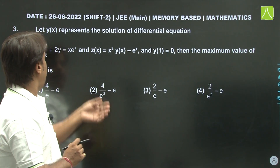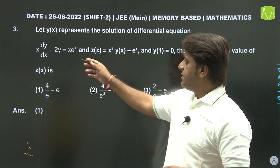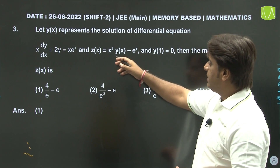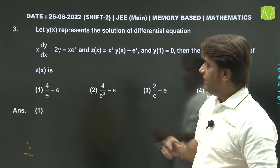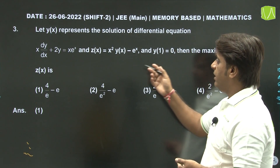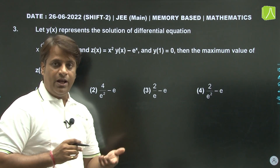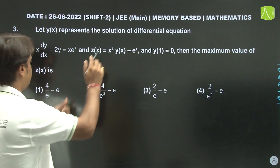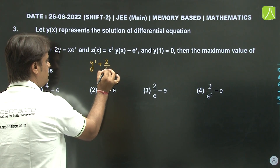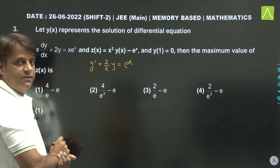Third question: Let y(x) represent the solution of a differential equation which can be easily reduced to linear form. Another function z(x) is defined in terms of y(x). We have to find the maximum possible value of z(x). First we need to calculate y(x). So: dy/dx + (2/x)y = eˣ. This is a linear differential equation.